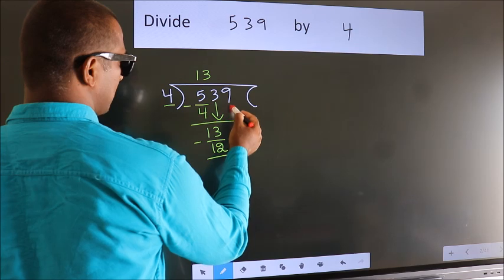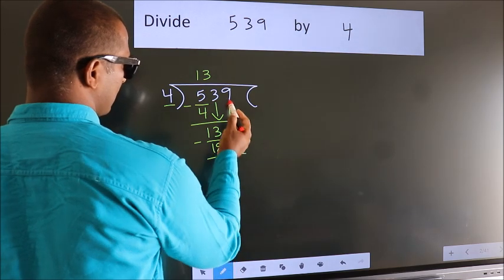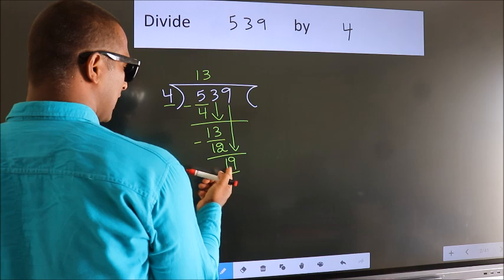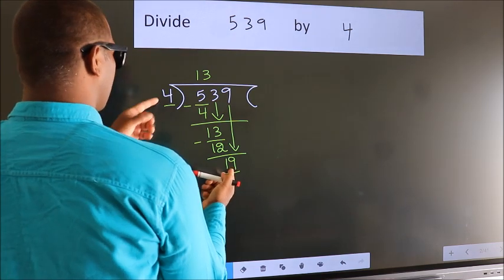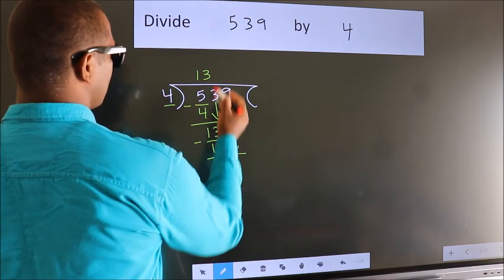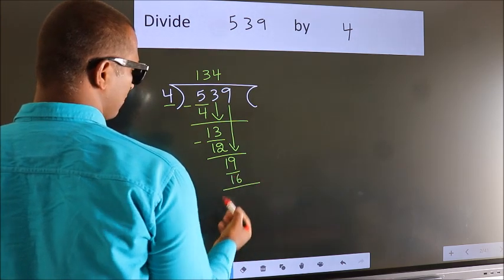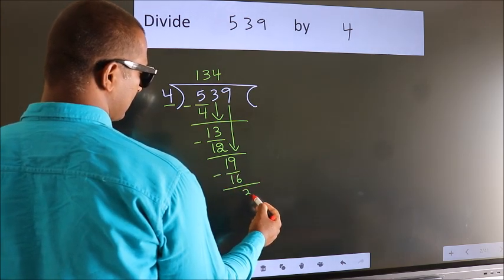After this, bring down the next number. So, 9 down, making 19. A number close to 19 in the 4 times table is 4 fours, which is 16. Now we subtract and get 3.